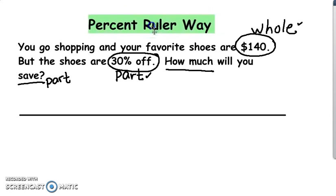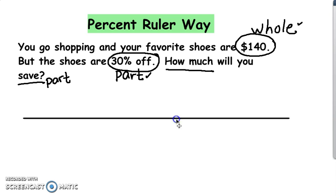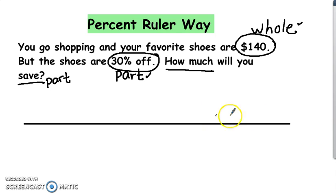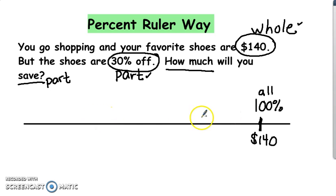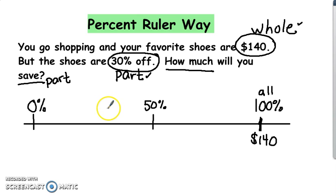I said I would be using the percent ruler way for this problem, so I started by drawing a straight line. In a percent ruler, I write down some numbers. The whole price at the store right now for my shoes is $140. If I were to pay the whole price, I would be paying 100% of the price — 100% means all of it, everything. So 100% of the price is $140. Now, if it's 30% off, I want to know what 30% off is. I know 50% is about here, 0% is here, so 30% is somewhere right here.